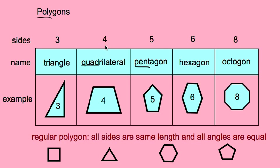Four sides is a quadrilateral. 'Quad' means four, and 'lateral' means sides, so it has four sides and four angles. Pentagon — 'pent' means five — has five sides and five angles. Hexagon — 'hex' means six — has six angles and six sides. So the number of angles and sides is always the same.